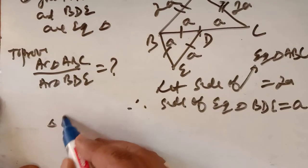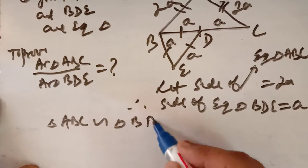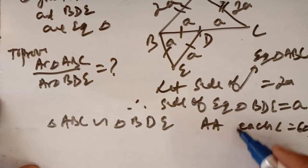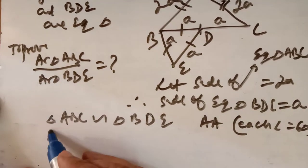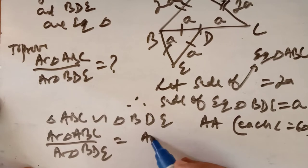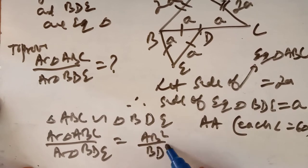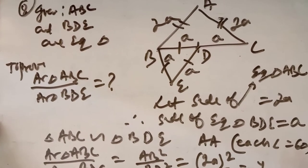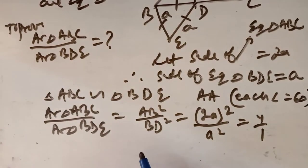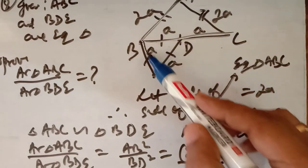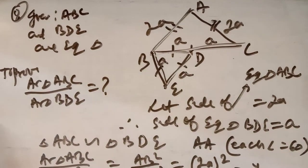Again, these two triangles are similar — ABC is similar to BDE by AA because each angle equals 60 degrees, and equilateral triangles are always similar. So ratio of area ABC / area BDE = AB² / BD² = (2A)² / A² = 4/1. We get 4 is to 1, so the area ratio is 4:1 — that is option C.